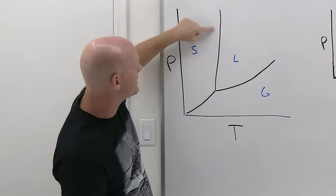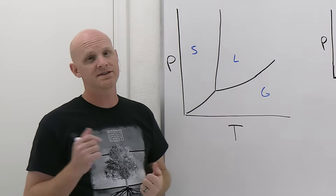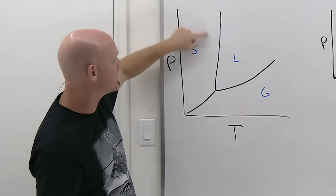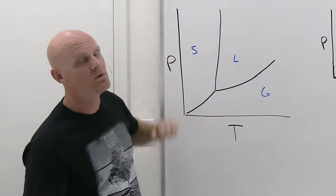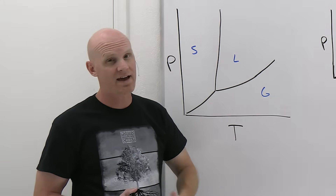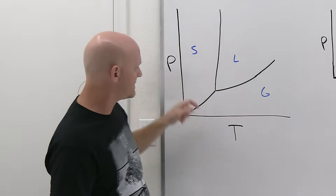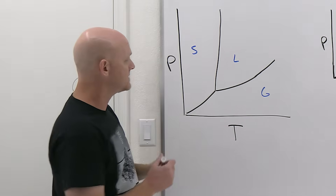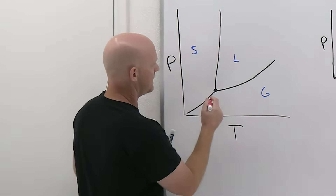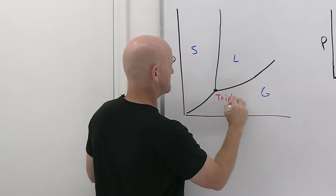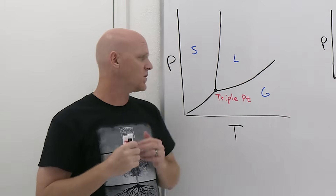The lines on the curves are called the lines of equilibrium because that's where you have two phases in equilibrium. If you're right on the solid-liquid line, you have solid and liquid in equilibrium together. Similarly, liquid and gas are in equilibrium on that line, and solid and gas on that one. There's one very special point where all three lines meet, and we call that the triple point — that's where all three phases are in equilibrium together.